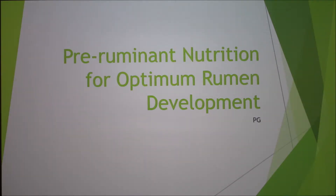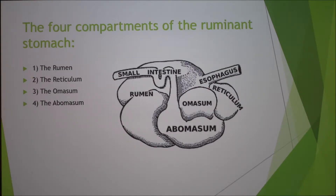Today I'm going to talk about pre-ruminant nutrition for optimum rumen development. I'm from a dairy farm, so this is quite important for us at home. The four compartments of the ruminant stomach are comprised of the rumen, the reticulum, the omasum and the abomasum.